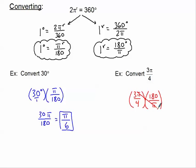Now I can see that the π cancels away and then I just have some math to do. 3 times 180 equals 540 degrees divided by 4, and 540 degrees divided by 4 is 135 degrees.